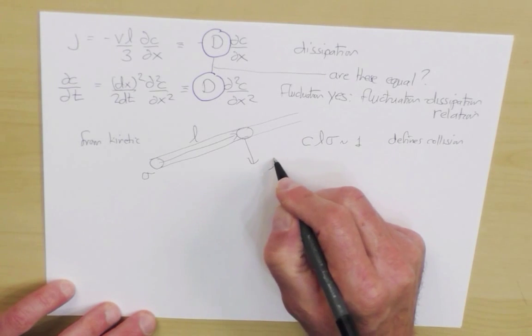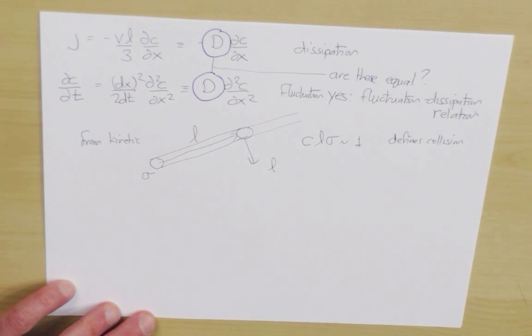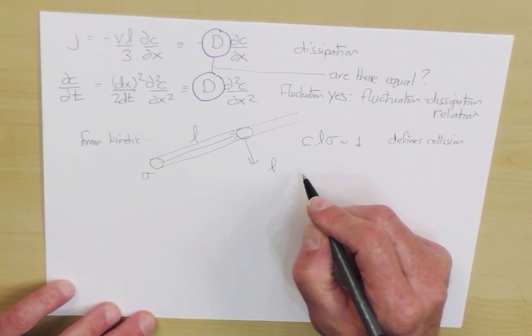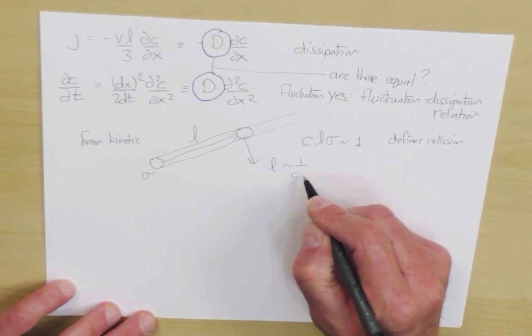And so we infer from this that the mean free path, the typical distance a molecule moves before it collides with anybody, is of the order of one over C sigma.